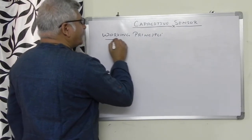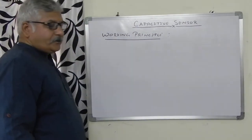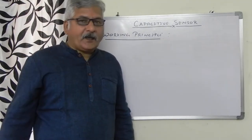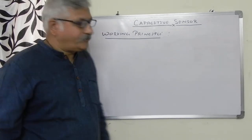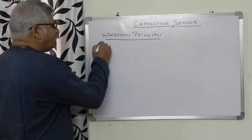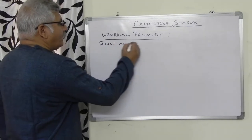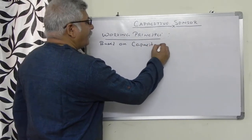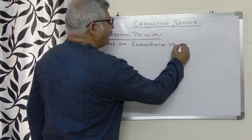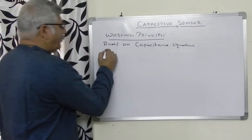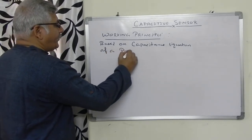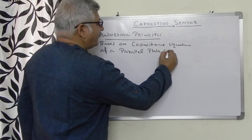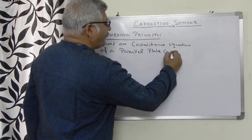The working principle of the capacitive sensor is based on the equation of the capacitance of a parallel plate capacitor. So the working principle is based on the capacitance equation of a parallel plate capacitor.